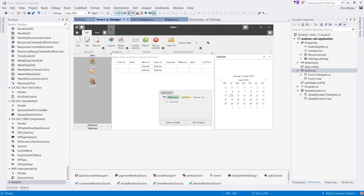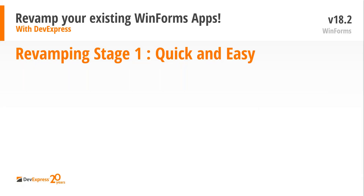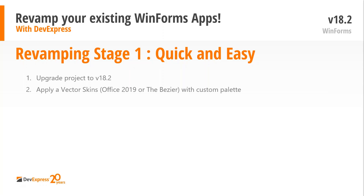So that is like a quick and easy thing to do once the upgrade proceeds as planned. To summarize what I did: I upgraded the project, applied a vector skin — the Office 2019 and Bezier skins are vector-based, which means they scale very well no matter how high the DPI is on your screen. I checked the box to use DirectX, checked the DPI-aware one, and if you are working for a touch device you could also go for the use touch UI checkbox.